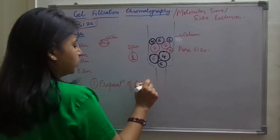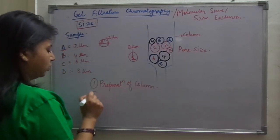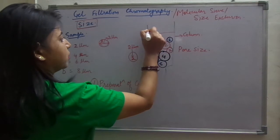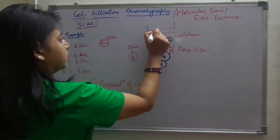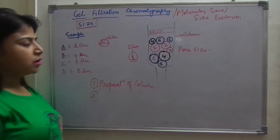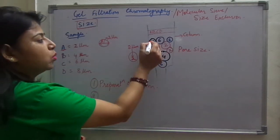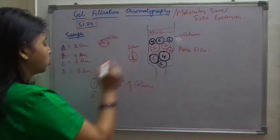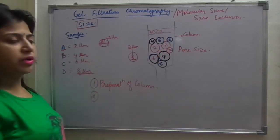In the second step, you add the sample, addition of sample containing A, B, C and D. Now, what will happen, D won't be able to enter any of these beads because its size is 8 micrometre.